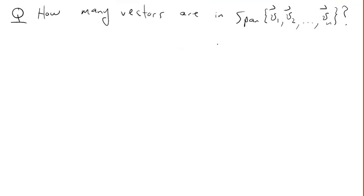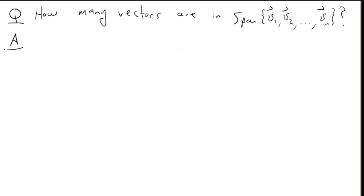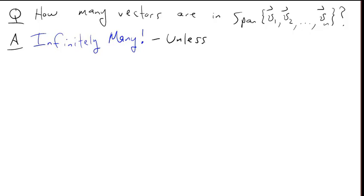Question: how many vectors are in the span of V1 through Vn? The answer is there are infinitely many, unless you have the particularly simple case that all the vectors V1 through Vn are equal to zero.